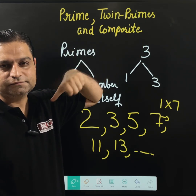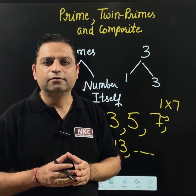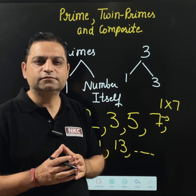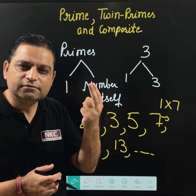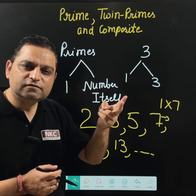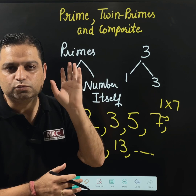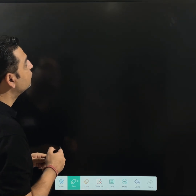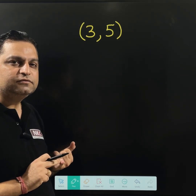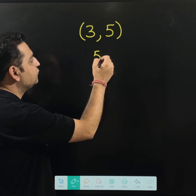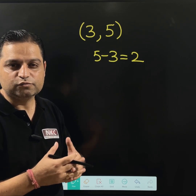Now if we move to twin primes. Twin primes — it is clear from the name that they are primes. But the only additional rule is their difference is 2 with each other. Twin means 2 together. Twin primes means 2 prime numbers together having a difference between them of only 2. For example, 3 and 5 — both are primes and the difference between them is 2. That means these are twin primes; this pair forms a twin prime.